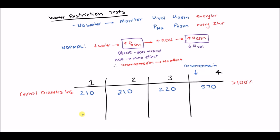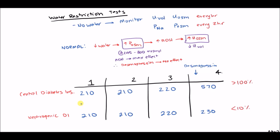In another scenario: urine osmolality stays around 210–220 through water restriction, but after desmopressin rises only to 230 — less than a 10% increase. This is diagnostic of nephrogenic diabetes insipidus. The patient is releasing ADH, and it's already having its maximum effect, but the kidneys are not responding. No matter how much desmopressin you give, it will have no effect.